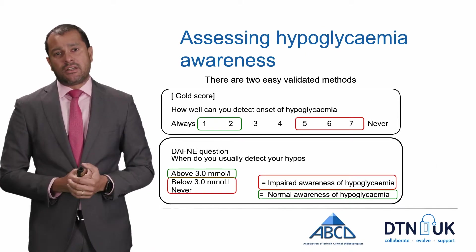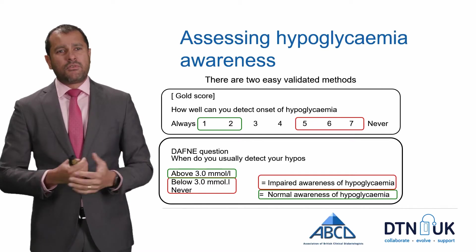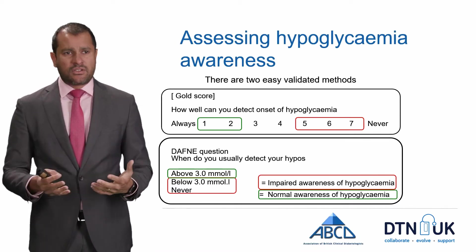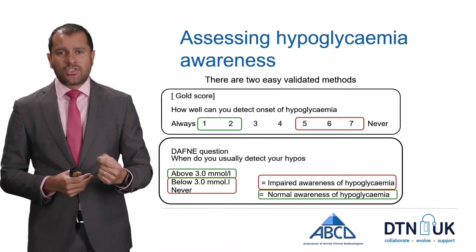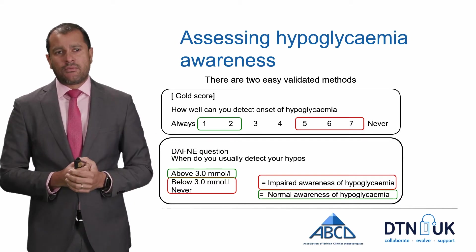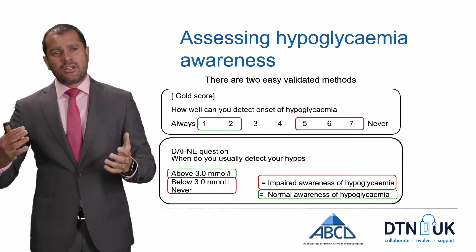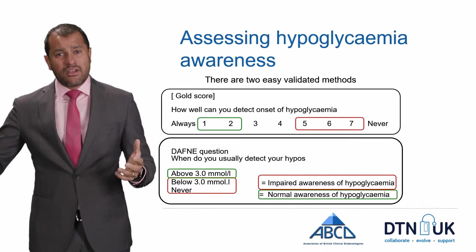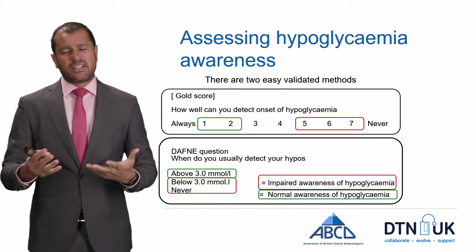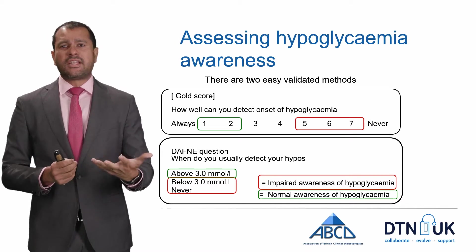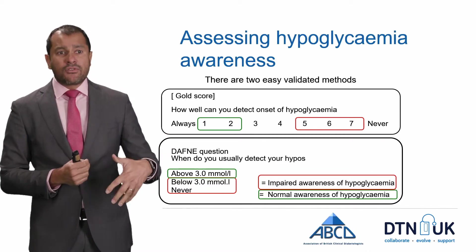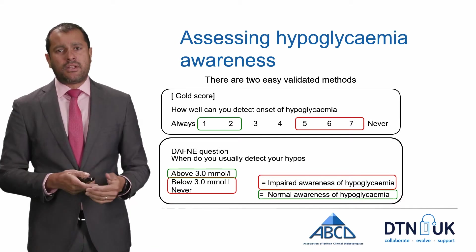Clinically, hypoglycemia awareness is defined using two questionnaires. The first is the Gold score, which asks: how well can you detect the onset of hypoglycemia? Scoring one or two means you've got normal awareness, but scoring five, six, or seven — where seven means never — indicates impaired awareness. The Daphne program asks when you usually detect your hypos: if it's usually above 3 millimoles per litre you have normal awareness, but if it's below 3 or never, you have impaired awareness of hypoglycemia.